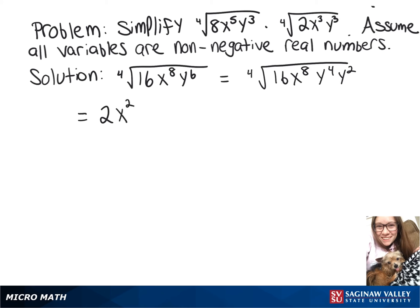Then we're going to take the 4th root of y to the 4th, which is going to give us the absolute value of y. And then we're left with the 4th root of y squared.